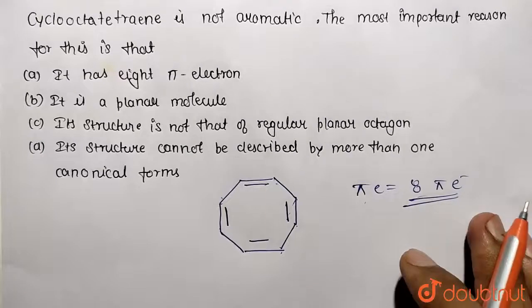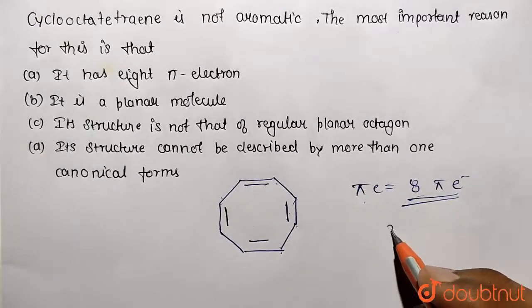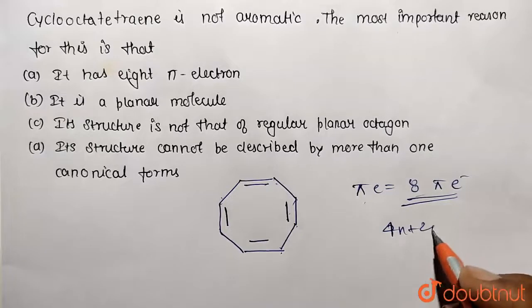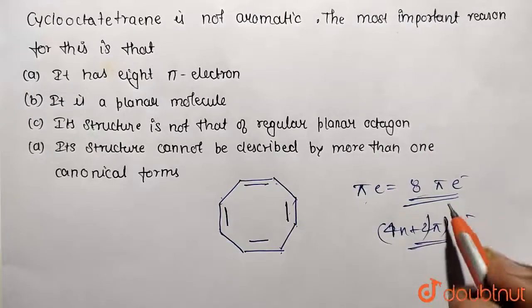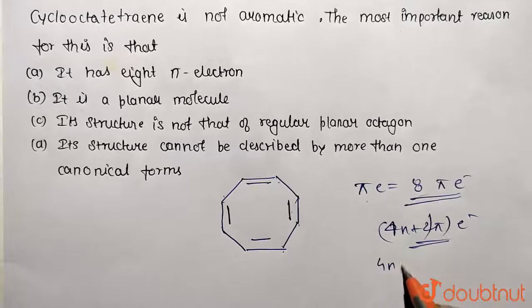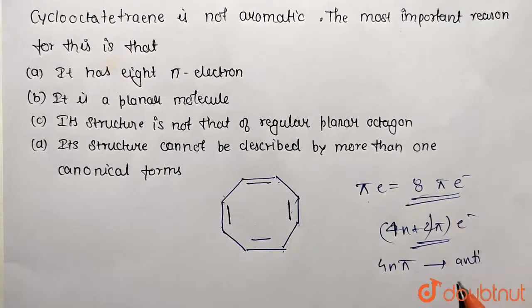So according to Huckel's rule, scientist Huckel said that 4n+2 pi electron system is aromatic in nature, but if it is a 4n pi electron system, then it is anti-aromatic in nature.